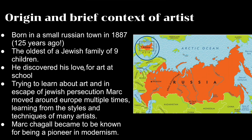First, we're going to go over the origin of Mark and a brief context of his life. He was born in a small Russian town in 1887, back when Russia was an empire. He was the oldest of a Jewish family of nine children. He discovered his love for art at school. Since his parents, despite they were not rich, were able to send him to school, which changed the course of his life and the course of art history.